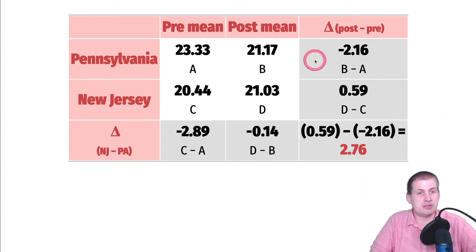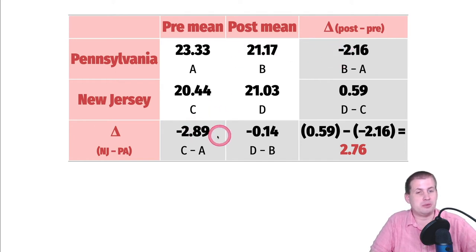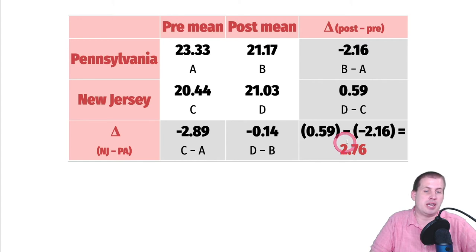It looks confusing at first because Pennsylvania dropped from about 23 jobs on average down to 21 — natural regional trends caused job losses. New Jersey didn't see those losses; they went from 20.4 to 21.03. So the reason the causal effect is so large — 2.76 rather than just 0.5 — is that New Jersey's minimum wage increase offset and reversed the economic decline happening in the control group. This 2.76 figure is what you can report, and it's the finding in that famous econometrics paper showing the rise in minimum wage caused about 2.76 more jobs on average.